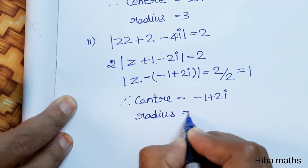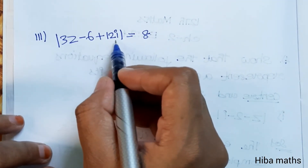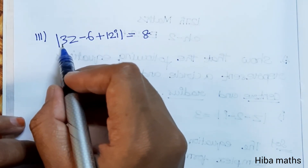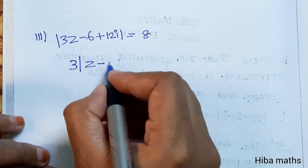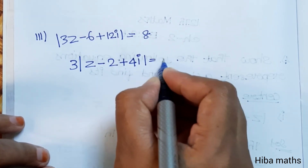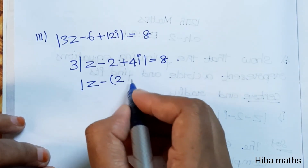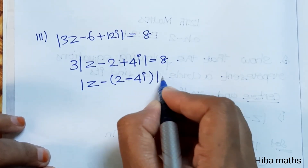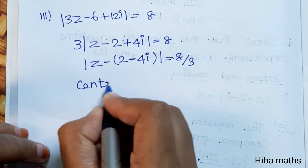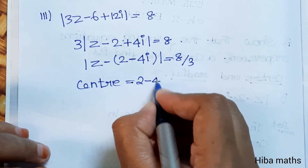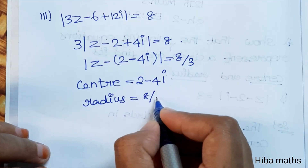Third subdivision: modulus of 3z minus 6 plus 12i is equal to 8. Taking 3 as a common factor, we get modulus of z minus 2 plus 4i equals 8 divided by 3, which gives z minus (2 minus 4i) equals 8/3. Therefore, center is equal to 2 minus 4i and radius is equal to 8/3.